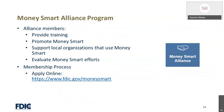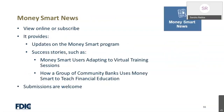The Money Smart Alliance Program: Alliance members provide training, promote Money Smart, support local organizations that use Money Smart, and evaluate Money Smart efforts. You can always apply to be part of the Money Smart Alliance at www.fdic.gov/moneysmart. The Money Smart News provides updates on the Money Smart program. We also post success stories — when Money Smart users have a success story they'd like to share, it will appear in the Money Smart News. Submissions are welcome from anyone, such as how a community bank uses Money Smart or teaches financial education in their community.